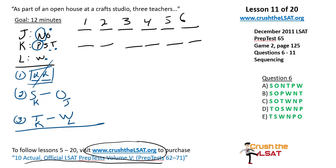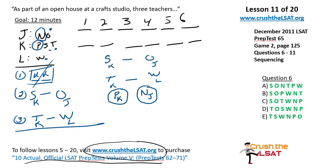Let's put all the rules into the diagram and combine them. Rule two: SK comes before OJ. Rule three: TK comes before WL. Our floaters are N (taught by J) and P (taught by K) — circle those. The three K's (which we'll call the Kardashian sisters) must be separated by at least one slot. So SK and TK are constrained to the left, PK can float, and OJ and WL must appear to the right of their respective predecessors.